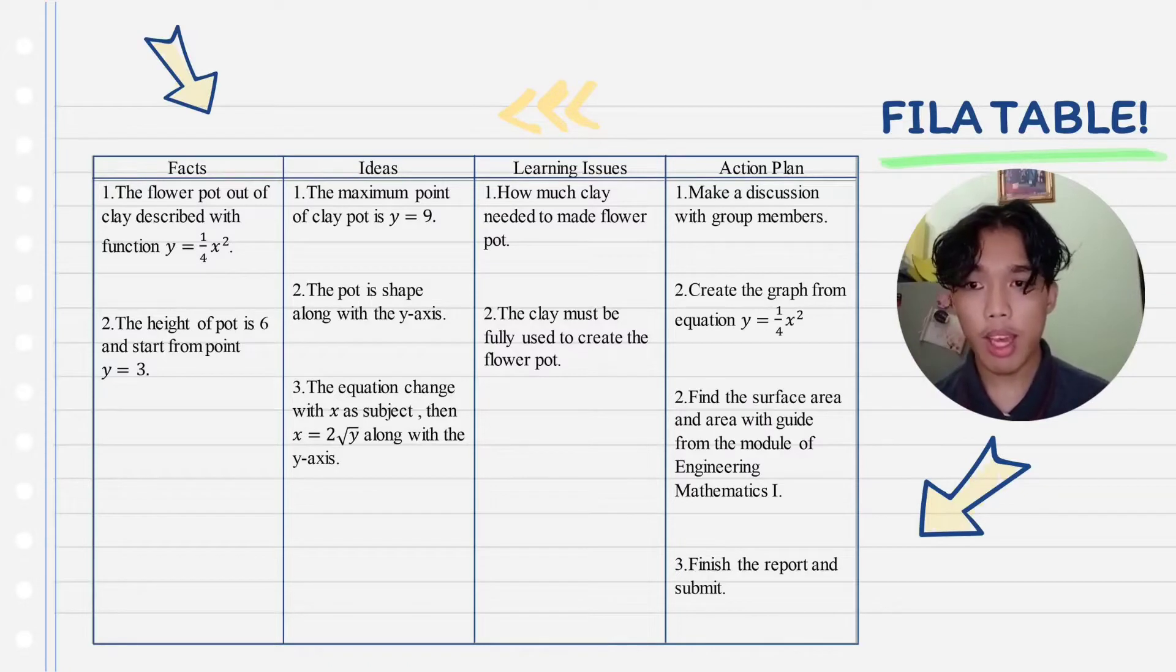The pot is shaped with y axis and the equation changes with x as subject, then x equals to 2 square root of y. With that y axis, that gives us the learning issues: how much clay needed to make the flower pot and the clay must be fully used to create the flower pot.